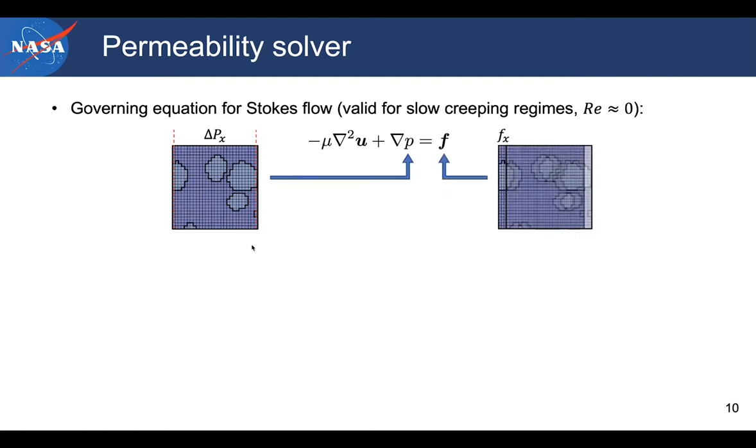On the other hand, another approach is basically imposing a body force. And you can see that I'm basically just imposing the force on the solid. And in this case, this creates also a velocity throughout your domain from which velocity you can back out effective permeability.